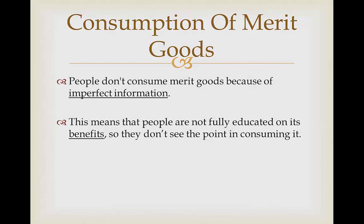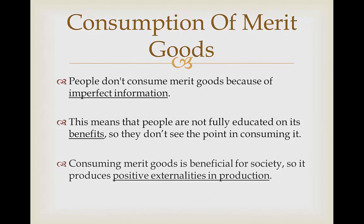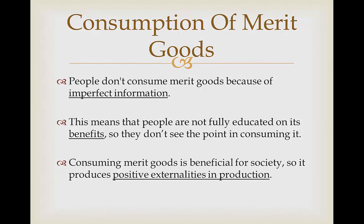As a result, they think fruit may not do that much for me, so they would rather eat perhaps sweets or meat. Consuming merit goods is beneficial for society, so it produces positive externalities in production.